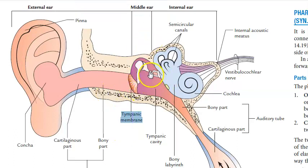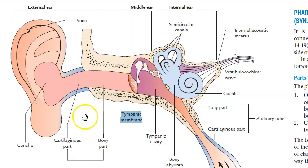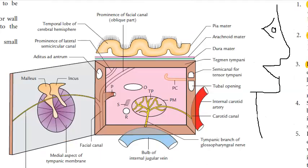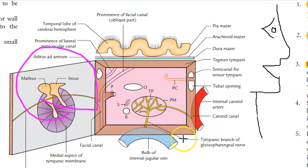In the middle ear you have the tympanic cavity. All these bones we will come to in detail — the stapes, malleus, incus. You remember all these bones. This is a schematic diagram showing the boundaries of the middle ear.